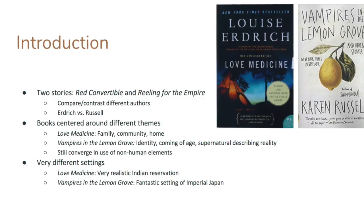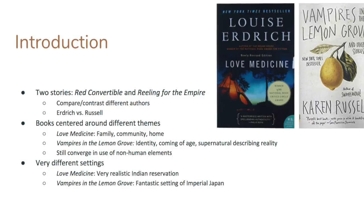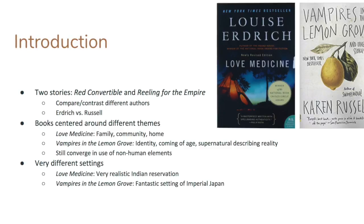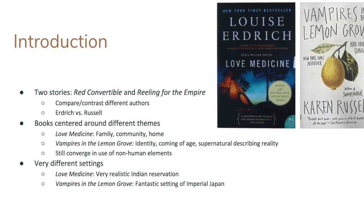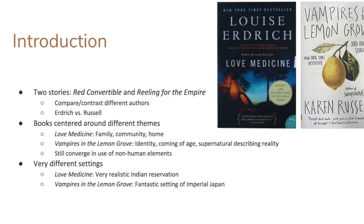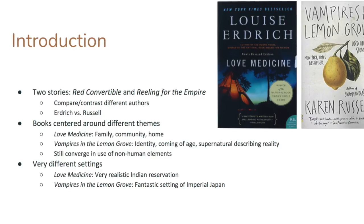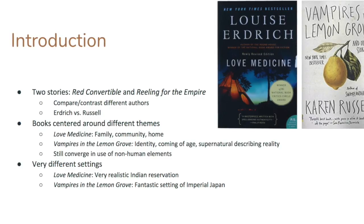The other thing to note is that the two stories also have very different settings. Louise Erdrich tends to stay in a very realistic setting — in Love Medicine, it's a realistic Indian reservation. In Vampires in the Lemon Grove, Karen Russell puts us in the fantastic setting of Imperial Japan, where there is quite a bit of supernatural activity occurring.